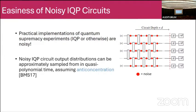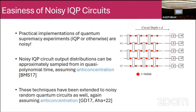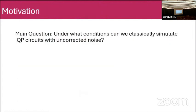What's been shown already is that for IQP circuits with an anti-concentrated output distribution, these circuits become easy to classically sample from when there's noise. These results were extended to noisy random quantum circuits as well, and again you have to assume the anti-concentration property. The main question I'm trying to answer is: under what conditions can we classically simulate IQP circuits with uncorrected noise? That result shows anti-concentrated circuits are not robust to noise and admit classical simulation.